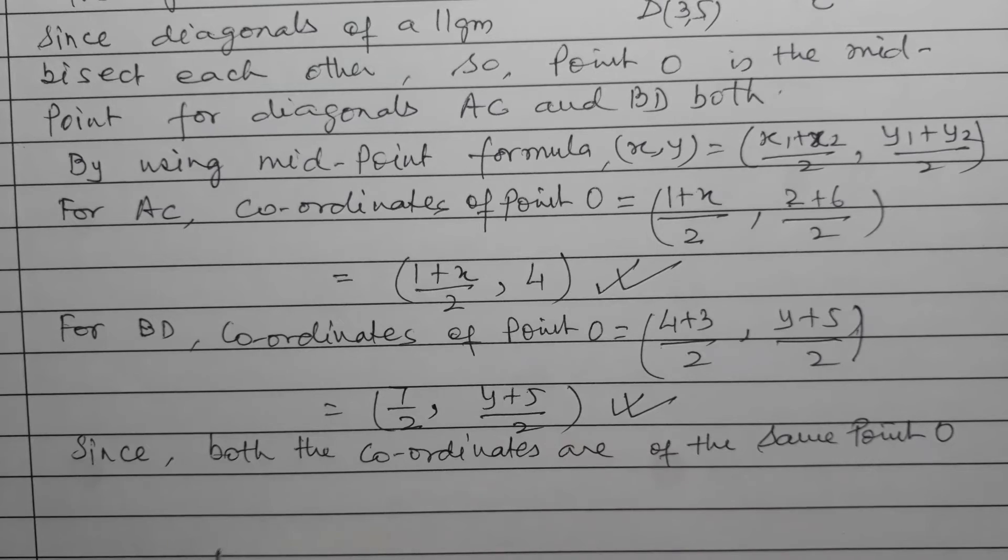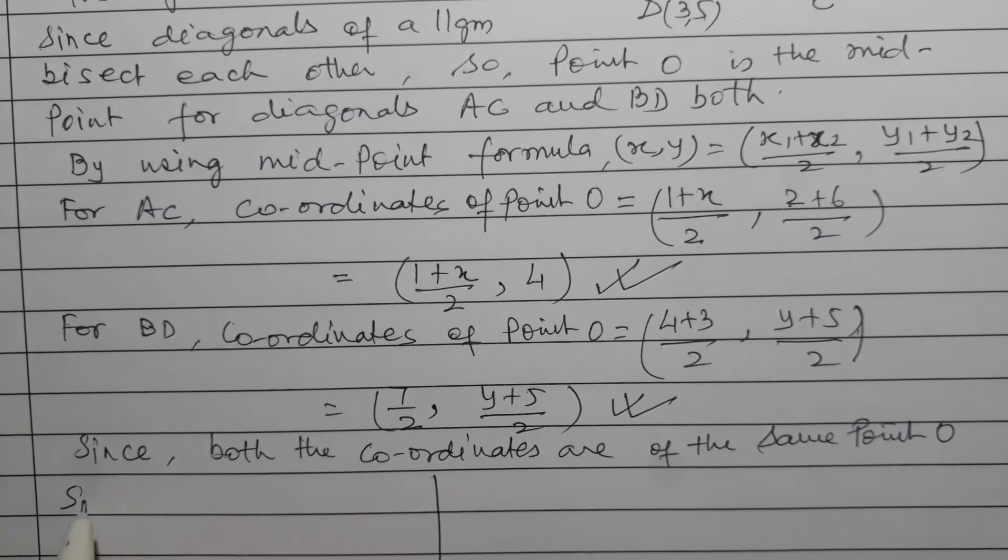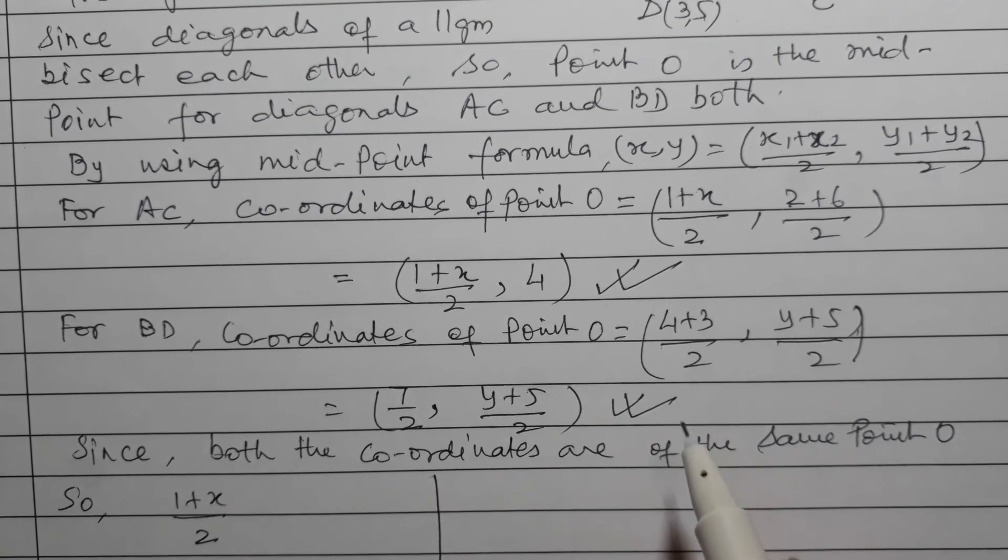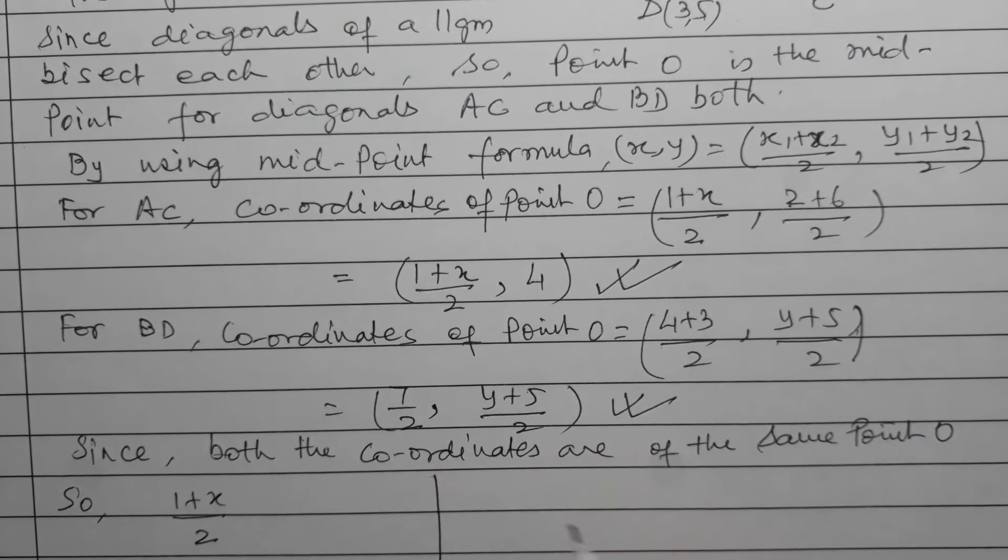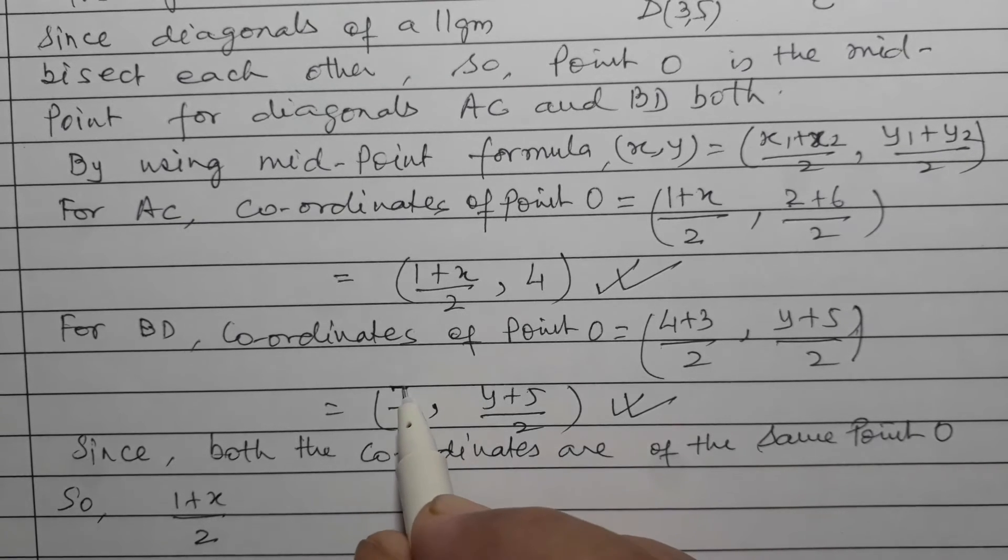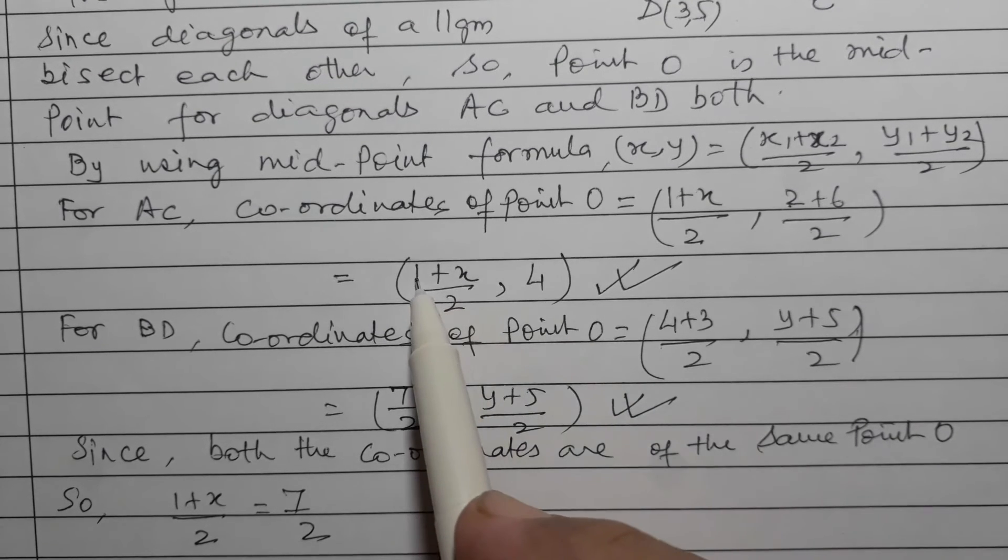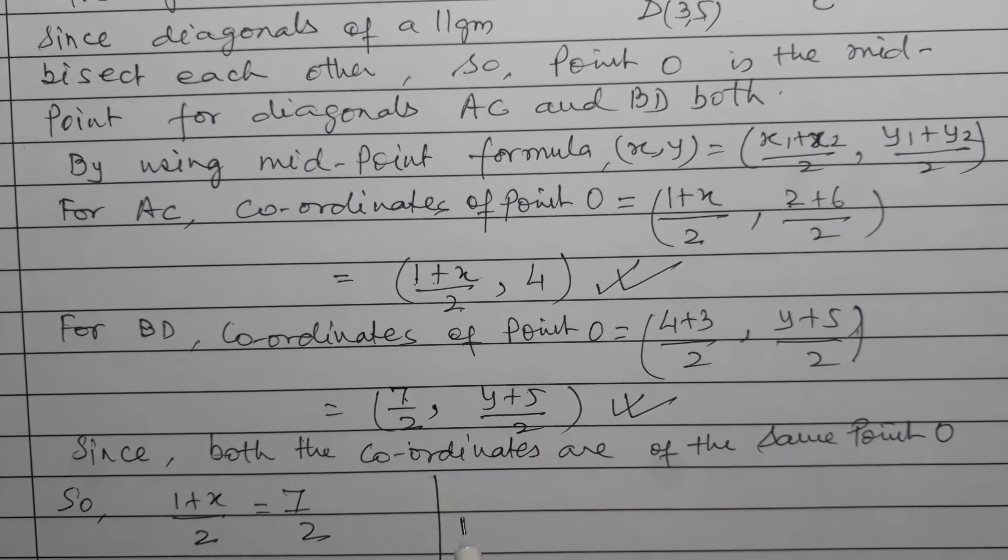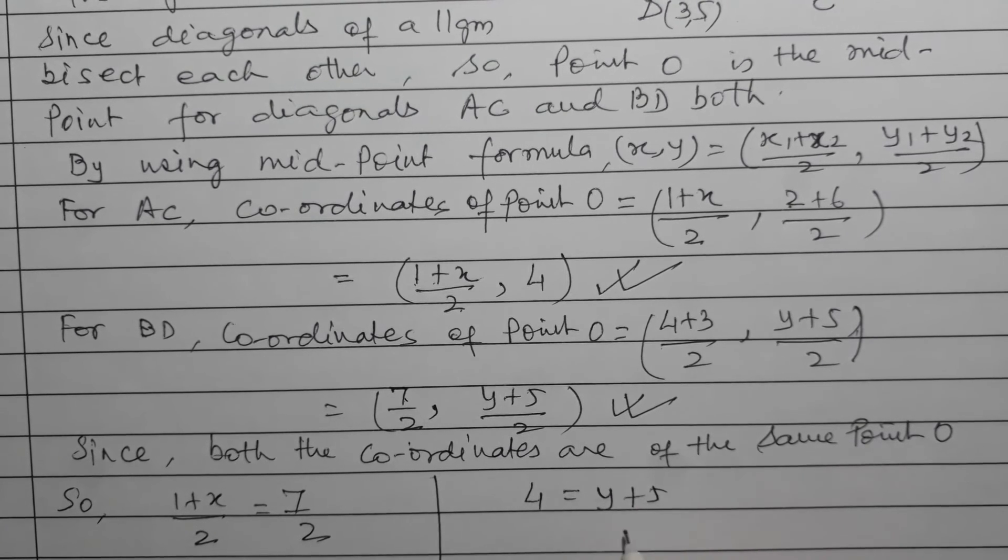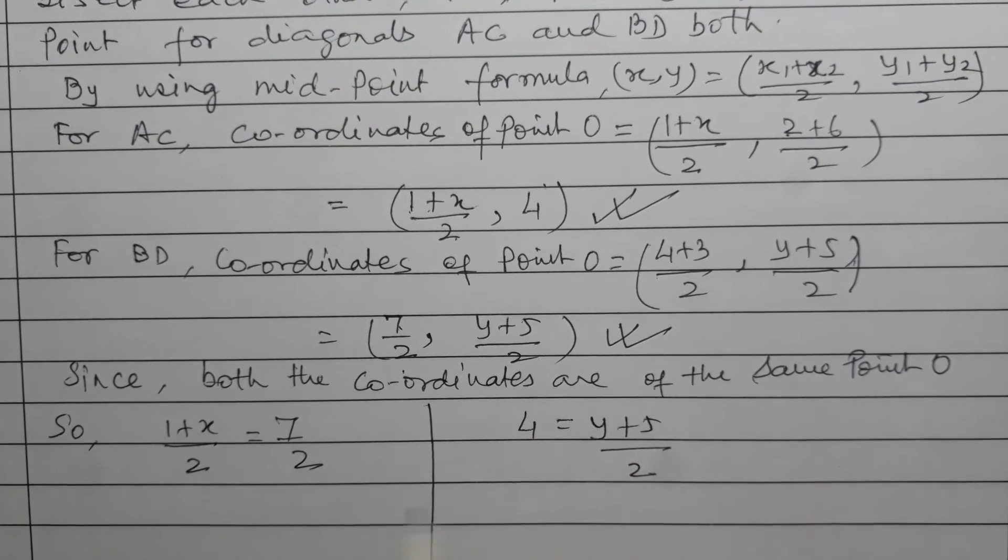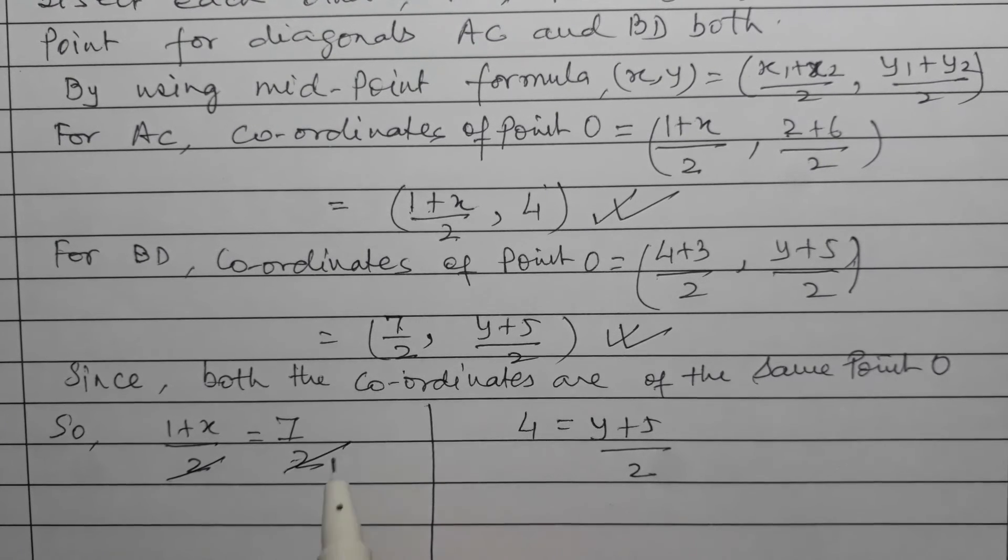So (1+x)/2 will be equal to 7/2. This is x: (1+x)/2 = 7/2. And here we have 4 = (y+5)/2. This is for y. Now from these two equations we'll find x and y values.